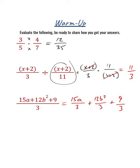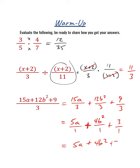We didn't need to separate them out if you can see that 3 is a common factor for all of these. But 15a over 3 is just 5a, because 15 divided by 3 is 5, so it's really 5a over 1. 12b squared over 3 is really 4b squared over 1. And 9 over 3 is 3 over 1. We don't need the 1 as a common denominator, so what we really have is 5a plus 4b squared plus 3.